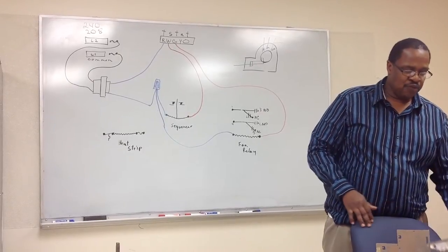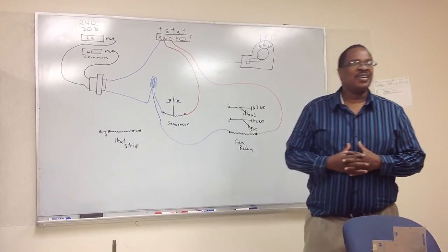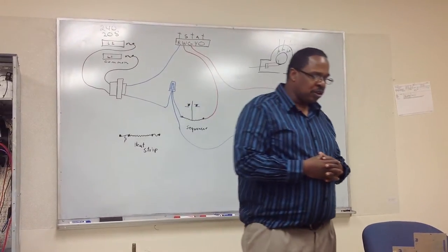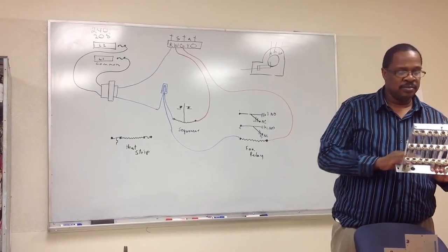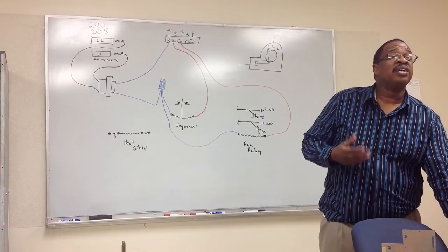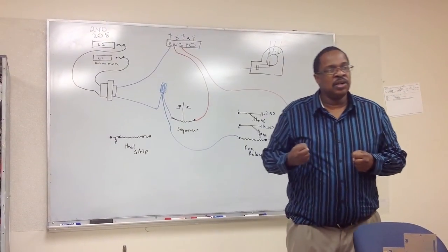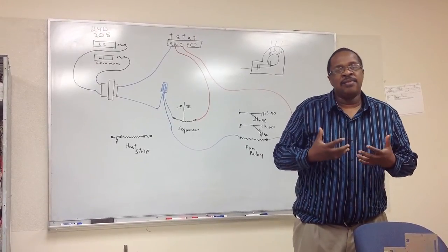And what makes heat strips put out good heat is that they resist electricity. Nickel chromium is the material used to make heat strips, and it's a vast conductor of electricity. Because it resists electricity, and we know if we got electricity, we have heat energy, it gives off heat.